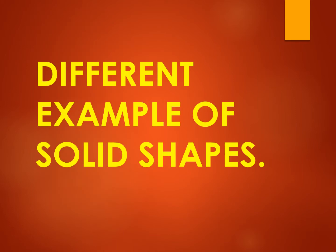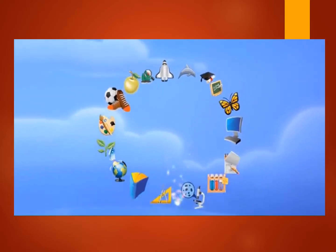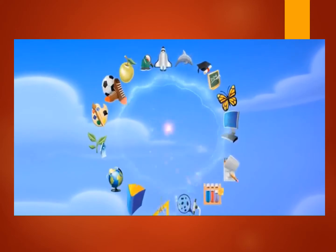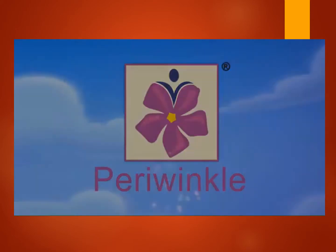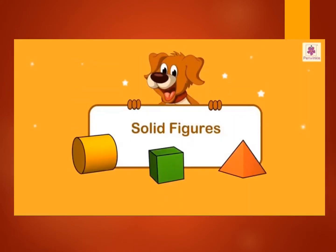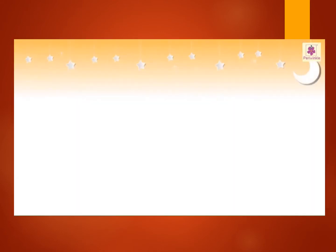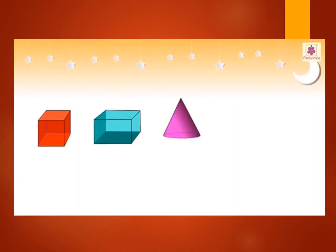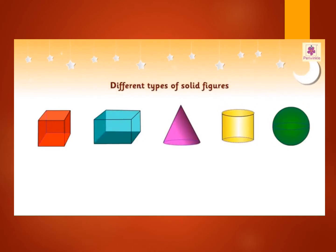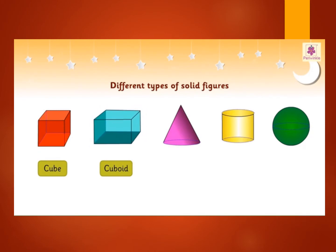Different examples of solid shapes. Solid figures. Let us explore solid figures. The different types of solid figures are cube, cuboid, cone, cylinder, and sphere.